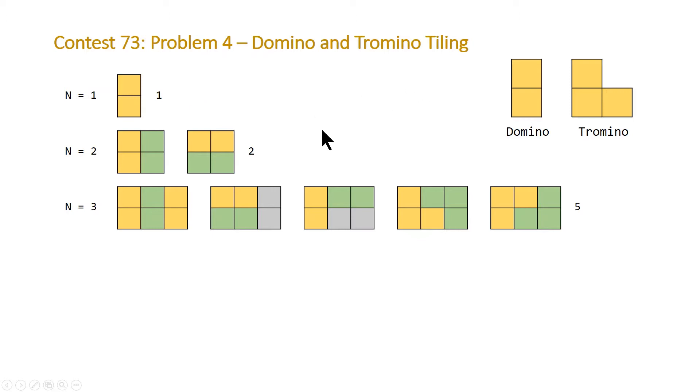For n equal to 2, meaning that we have a 2 by 2 board, we have two solutions: two vertical dominoes and two horizontal dominoes. Note we can't use a tromino because that would just leave an empty space here and we don't have a tile that will fit that empty space.